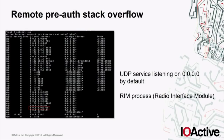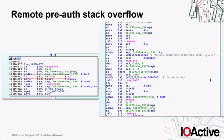Now with a root shell, we can start looking at what services are running by default. For instance, there's port 3799 UDP listening over all IP addresses, which is the RIM process — the Radio Interface Module. We're going to see a remote pre-authenticated stack overflow of this service, but this only affects older versions of the firmware. I wanted to share it because it seems they tried to fix it but made another mistake, as we'll see shortly.